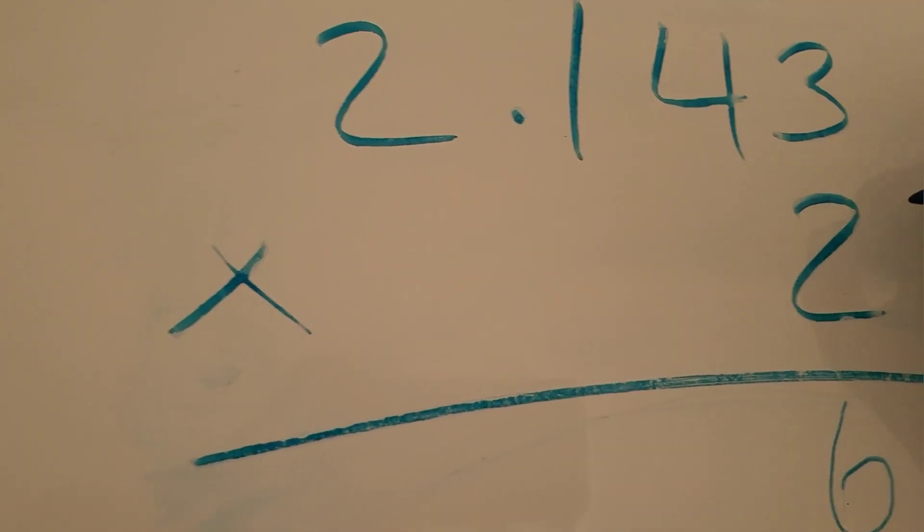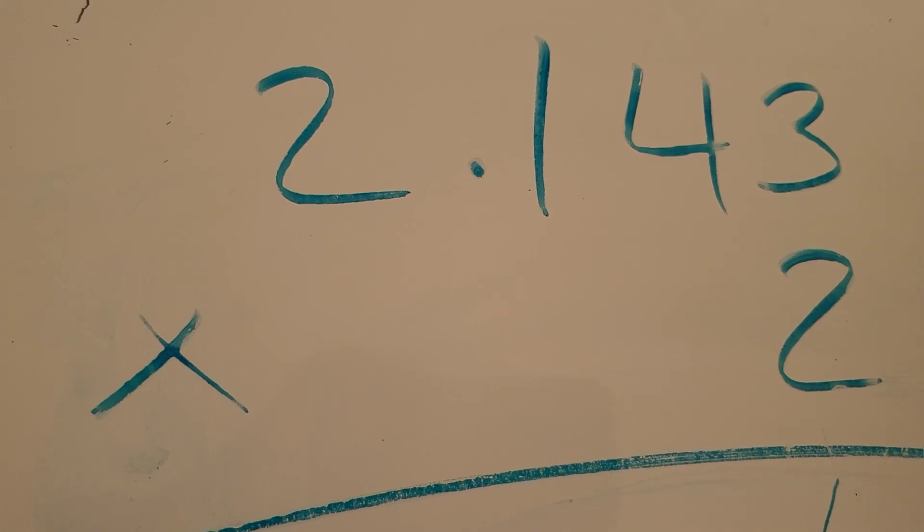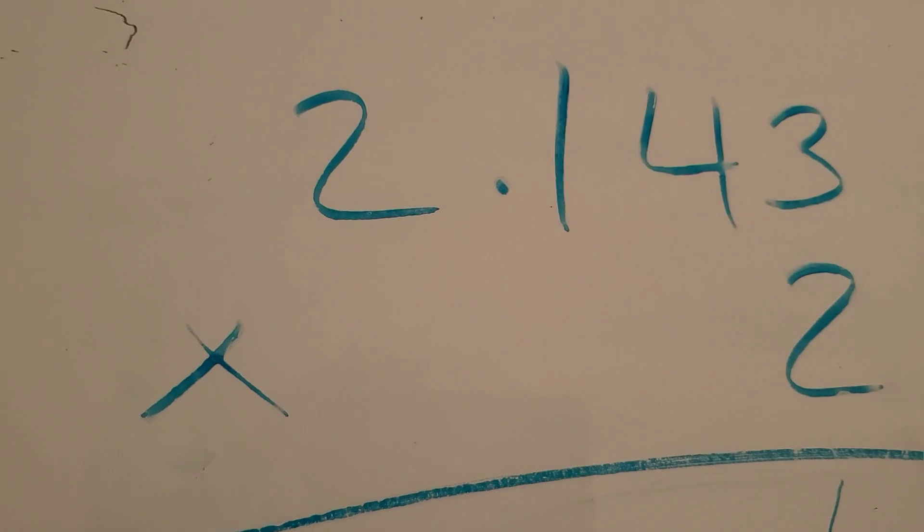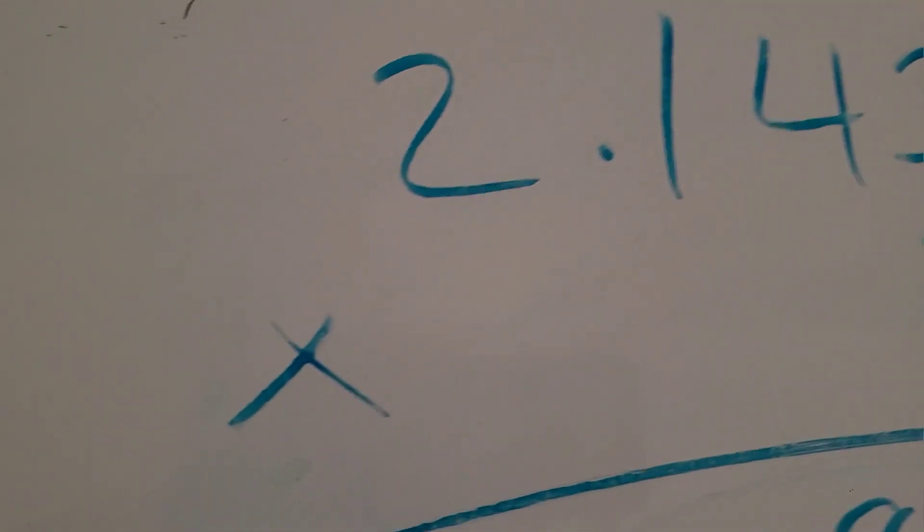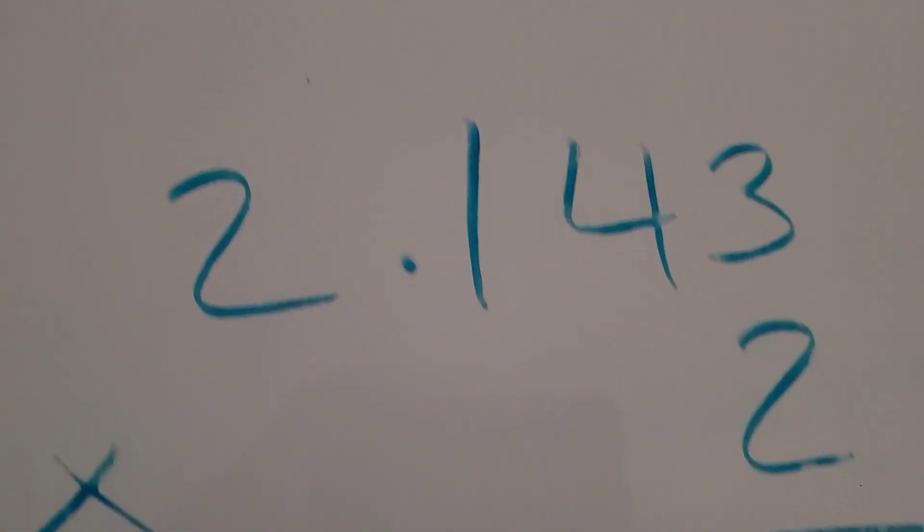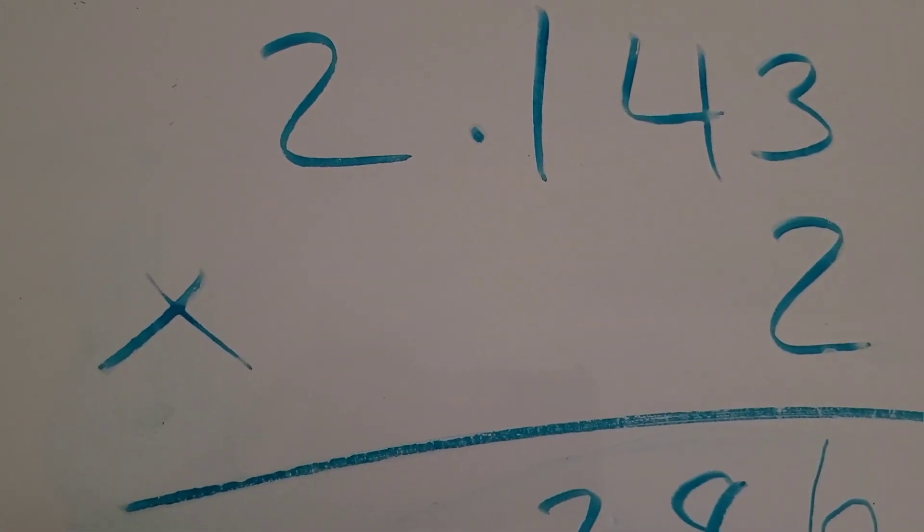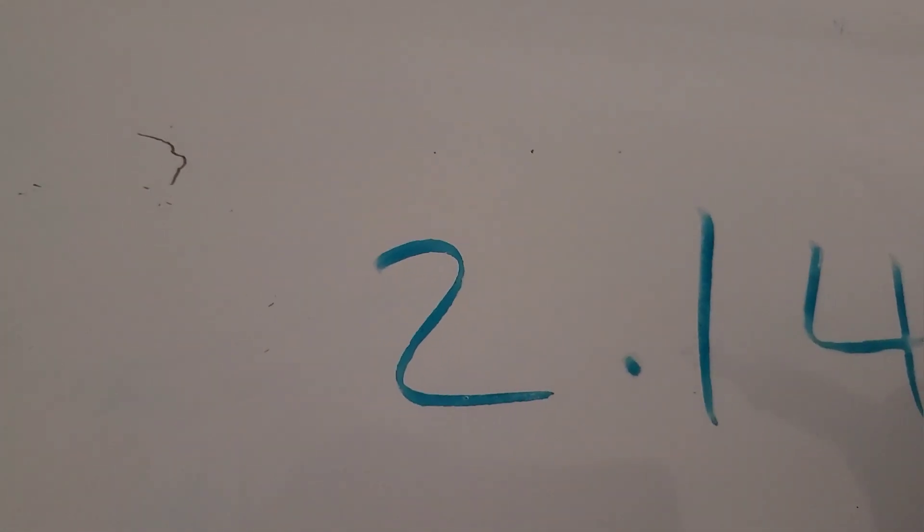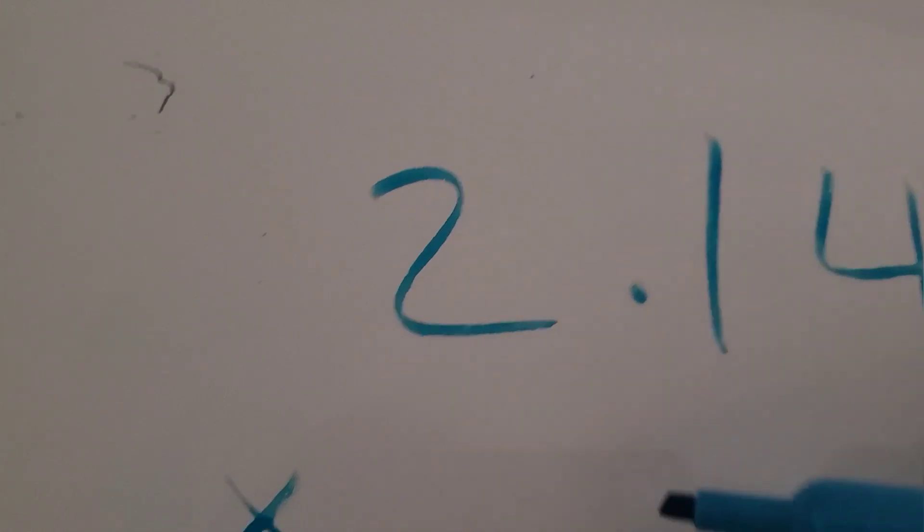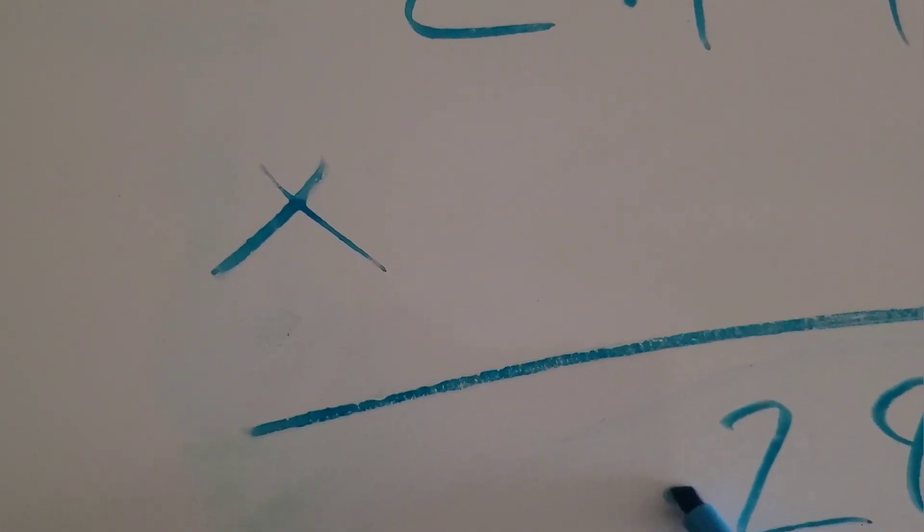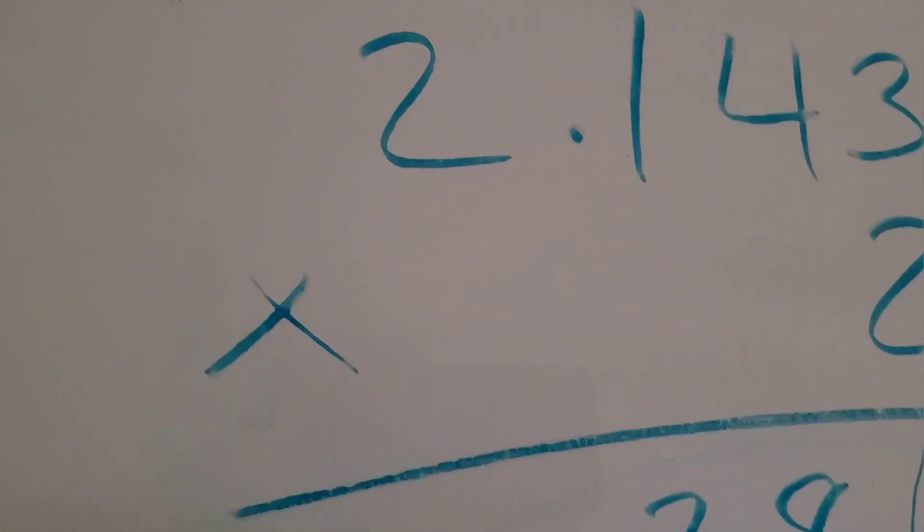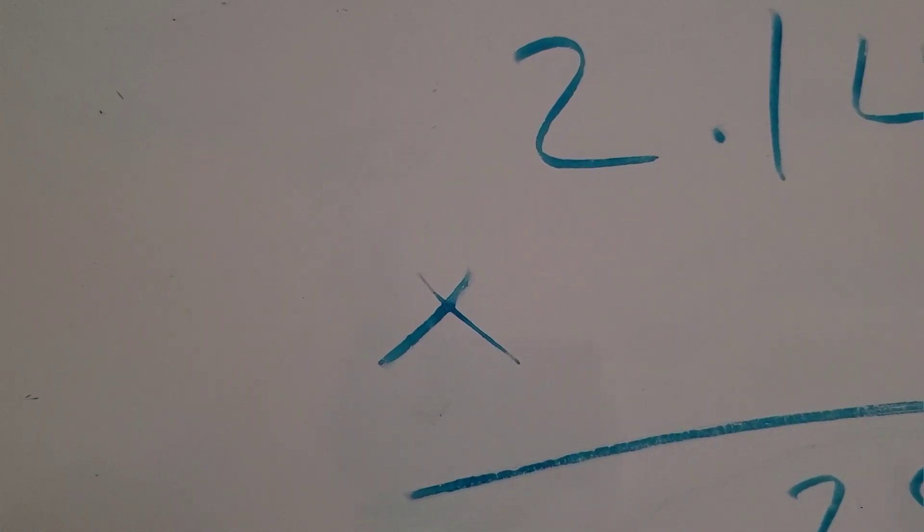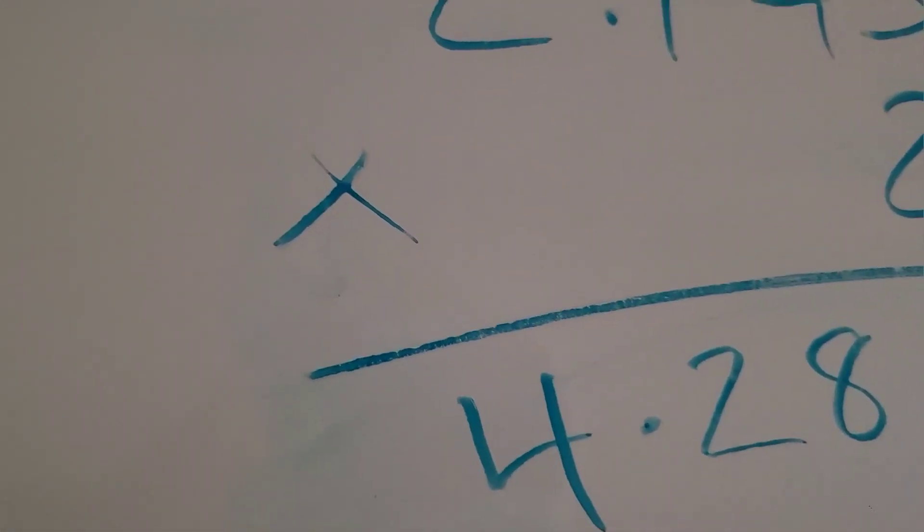Then we're going to remember to line in your decimal point. So this is where you remember to add in your decimal point. It has to be in line. And then 2 times 2 is 4. So this is the answer right here.